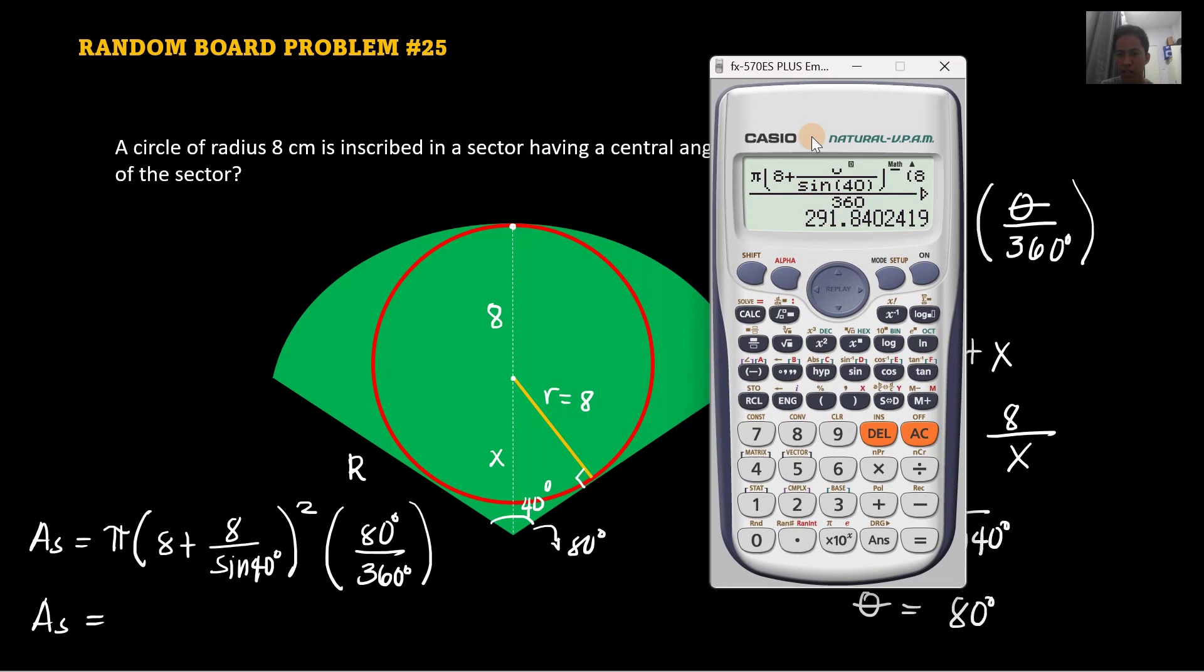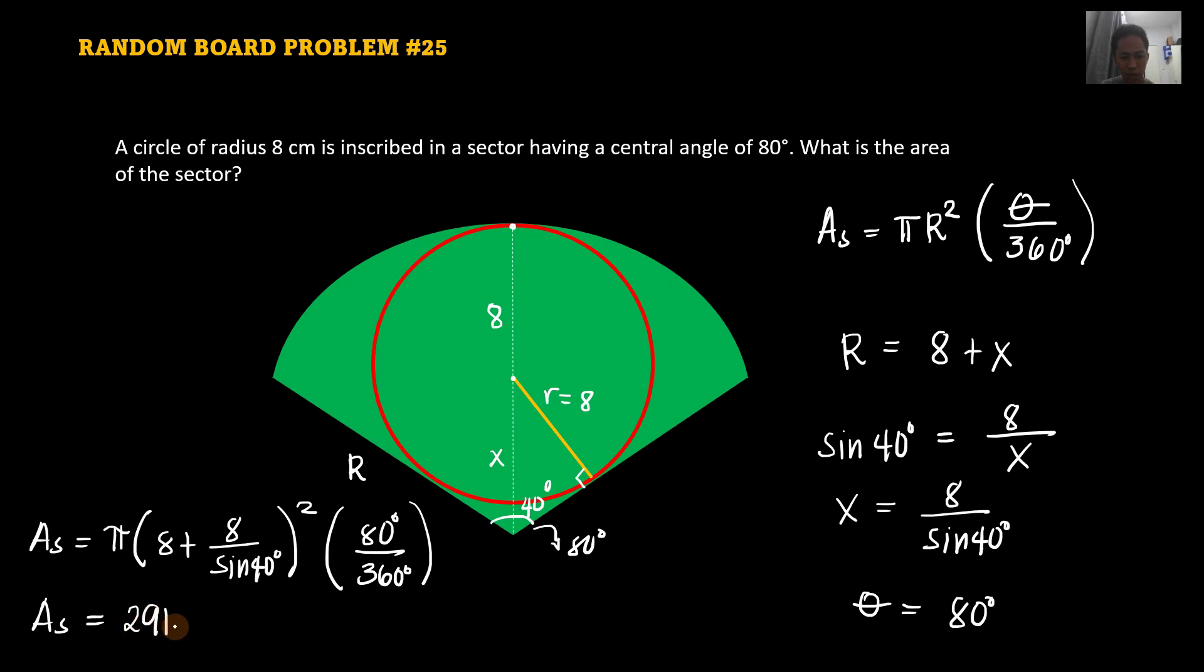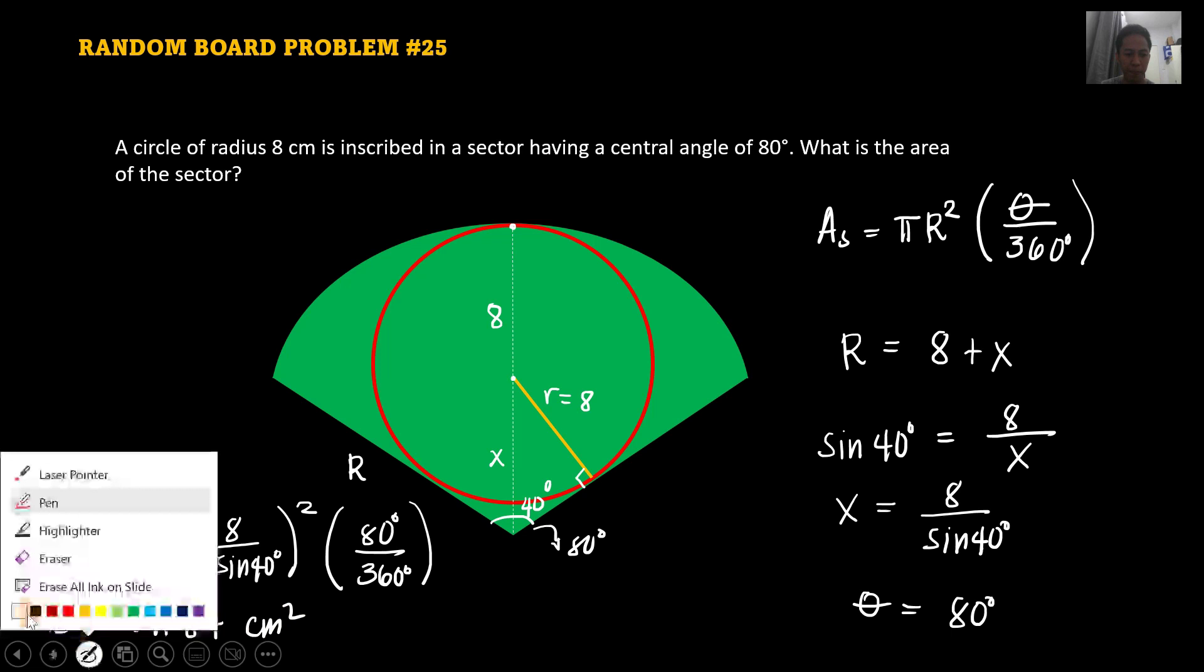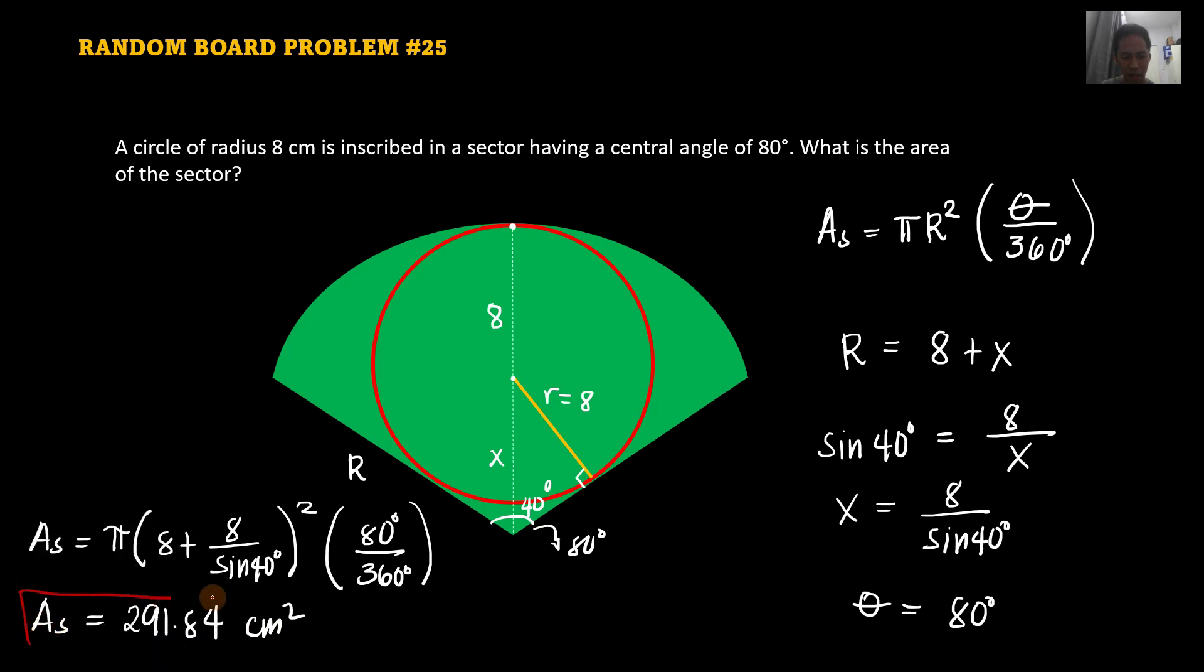So this is the area of that sector. So 291.84 square centimeters. So that is the area of the sector. So 291.84 square cm. So that is the final answer for this past board exam problem.